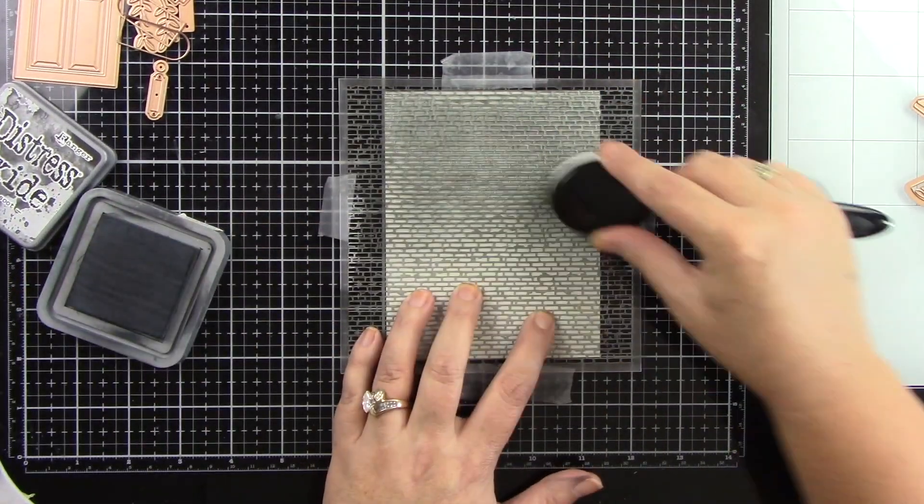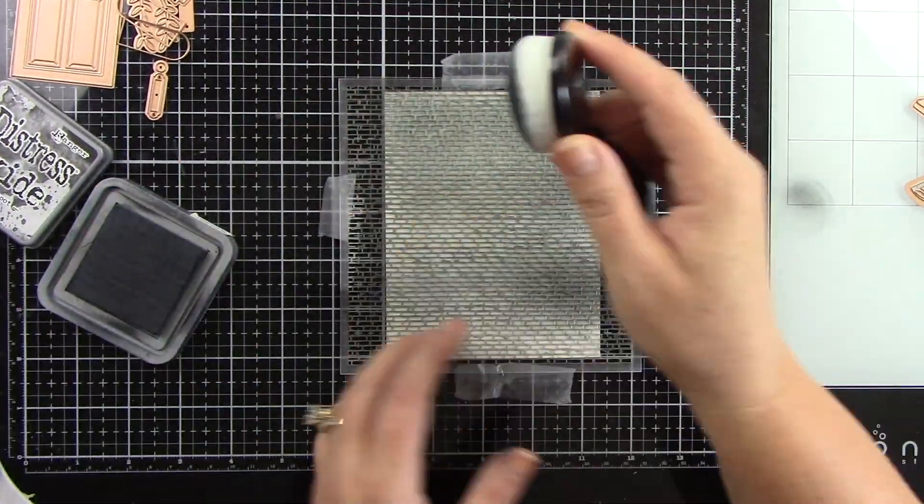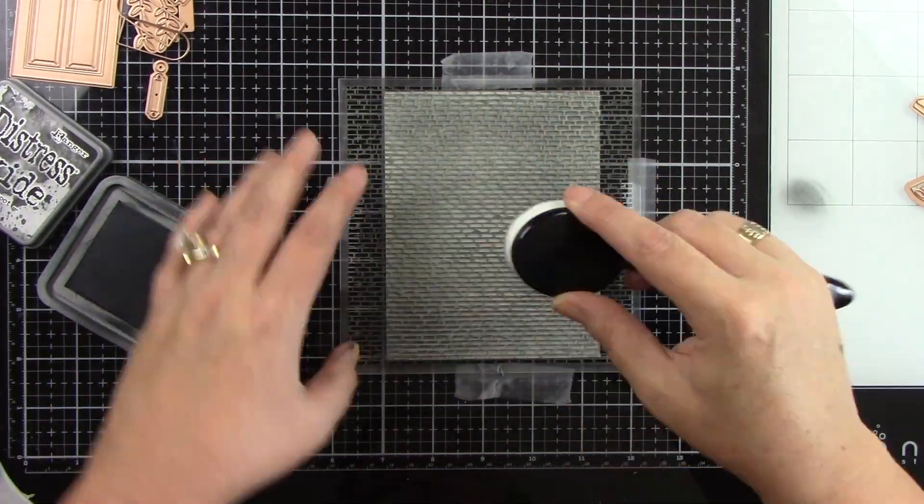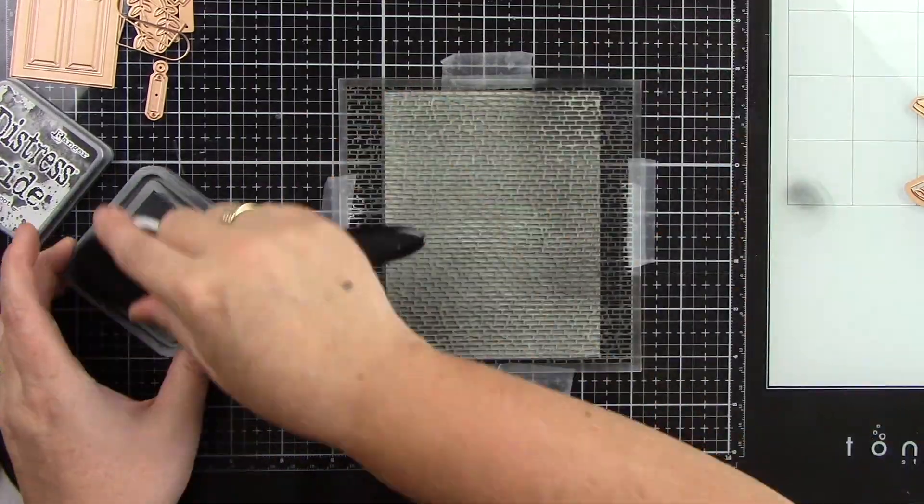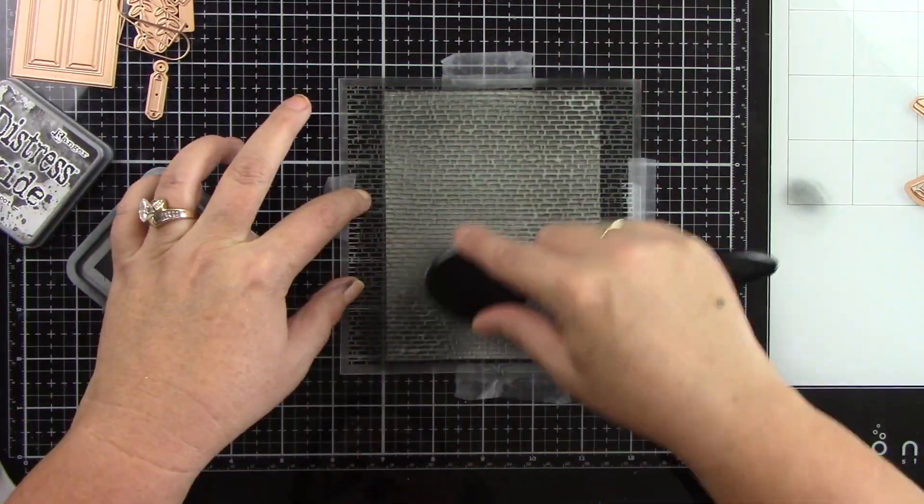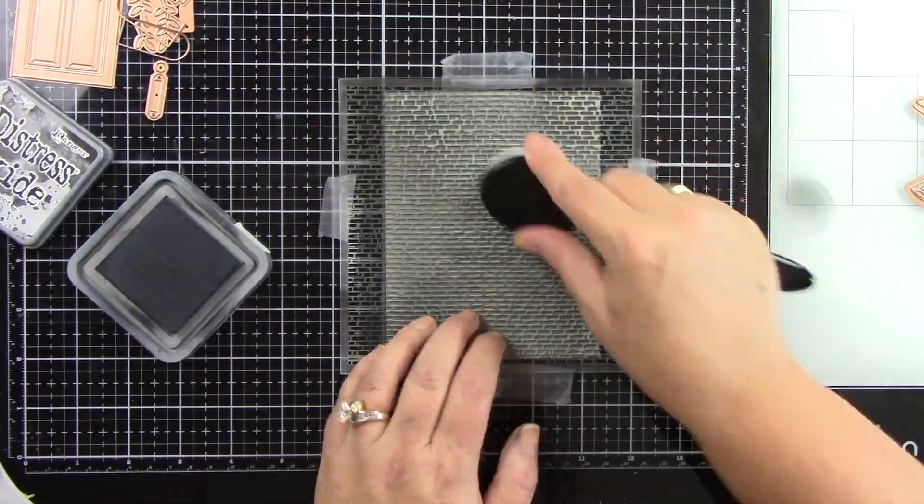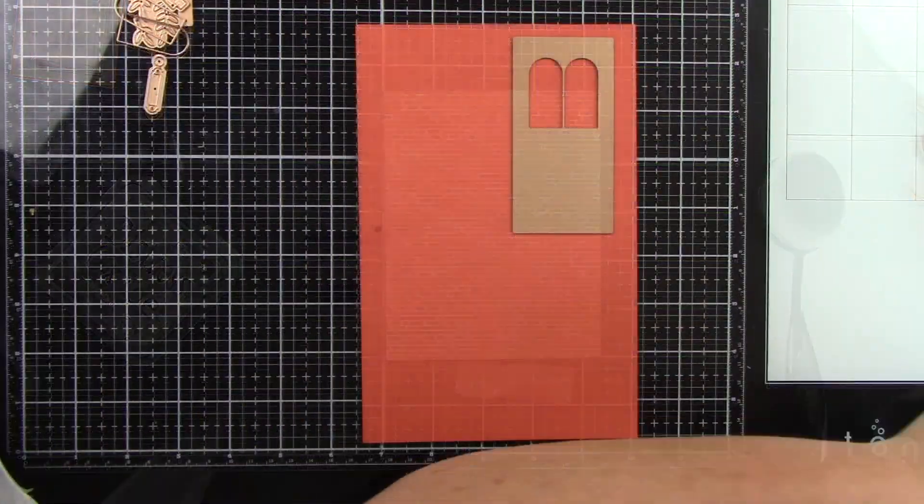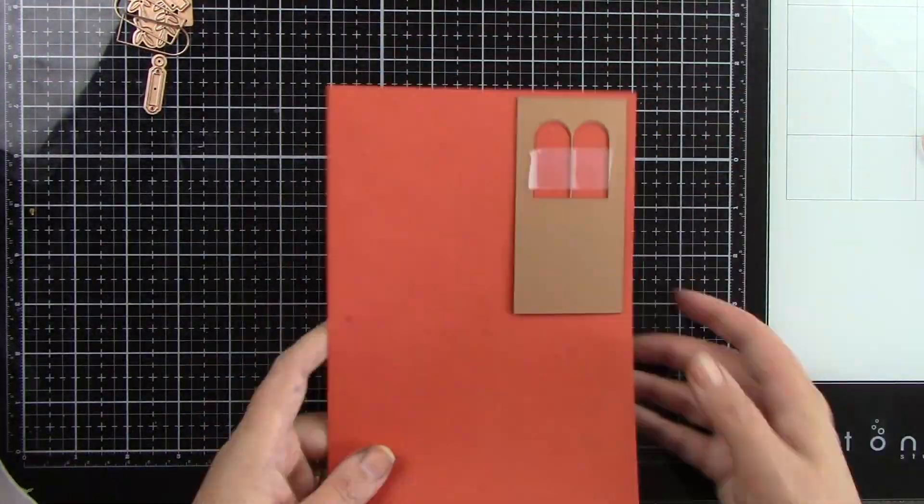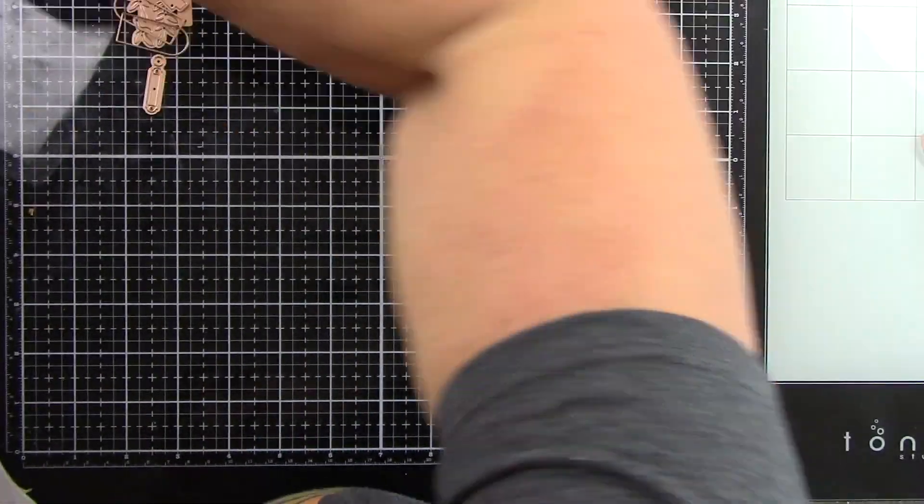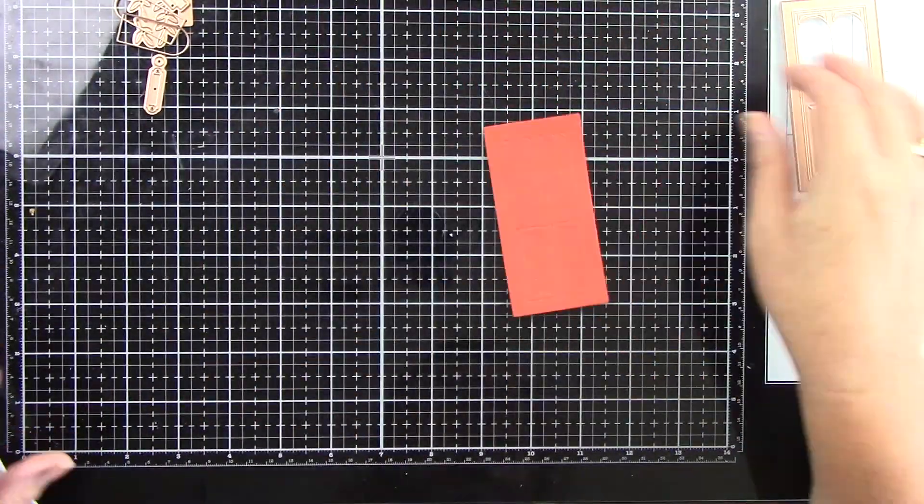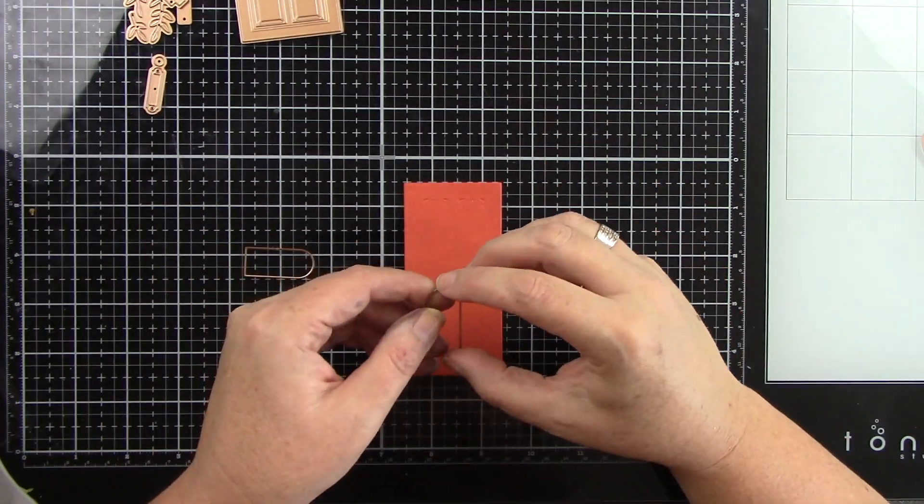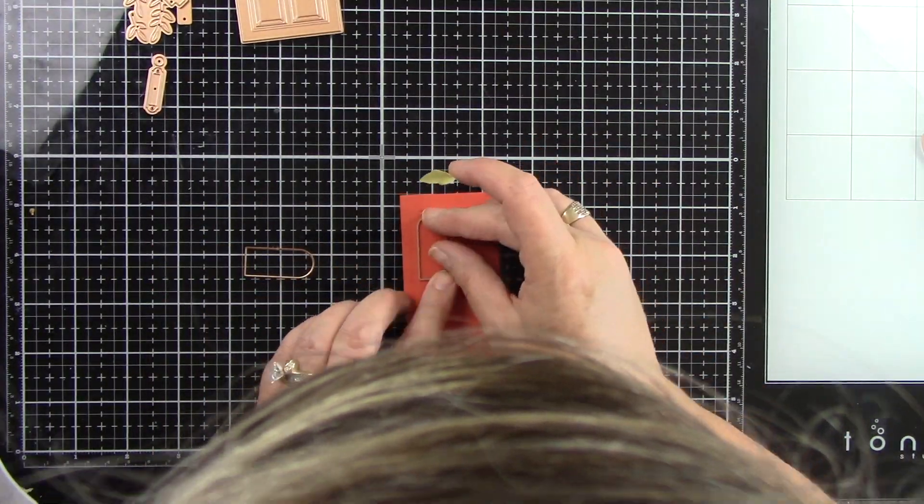I am using the open house Halloween, and I'm actually going to also use the open house door base. So I'm stenciling a piece of light gray cardstock with honeybee stamps salvaged brick stencil with black soot, because I really want this house to feel kind of creepy, dingy kind of a look. I am using the door, the open house door base, and I'm die cutting that from flame cardstock from cardstock warehouse. I really kind of wanted a deeper orange for this house.